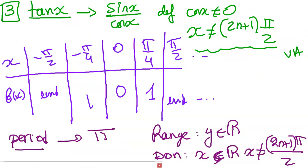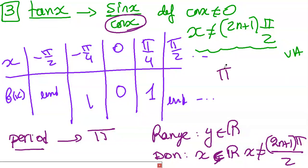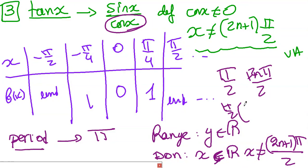Now let's move to tangent x. Tangent is sine over cosine — it's a fraction. A fraction is defined when the denominator is not equal to zero, so when cosine is not equal to zero. Cosine x equals zero for π/2, -π/2, and all their equivalents. So x must not equal (2n+1)π/2. Equivalently, x cannot equal π/2 + nπ, because the period of tangent is π. Factoring gives x not equal to (2n+1)π/2.